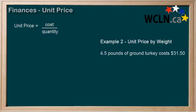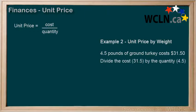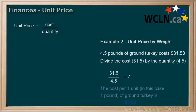Here's another example where the quantity is by weight. Let's say you're buying 4.5 pounds of ground turkey, which costs $31.50. We would divide our cost, $31.50, by the quantity, 4.5 pounds. So 31.5 divided by 4.5 equals 7. So the cost per 1 pound of ground turkey is $7.00.